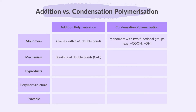The double bonds in alkene monomers break, allowing the monomers to link together without the loss of any atoms. The polymer forms through the opening of these double bonds. Condensation polymerization involves a condensation reaction where each time two monomers join, a small molecule — typically water — is lost as a byproduct. In addition polymerization, no byproducts are formed; only the polymer is produced.